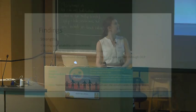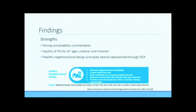So what did I find? Squamish's OCP was particularly strong in healthy neighborhood design principles listed in an excerpt from the Linkages Toolkit, which include elements such as walkability, mixed land use, complete neighborhoods, and enhanced connectivity. The OCP also contains strong statements in support of environmental sustainability, and the community vision statement did suggest high quality of life for all ages, cultures, and incomes.